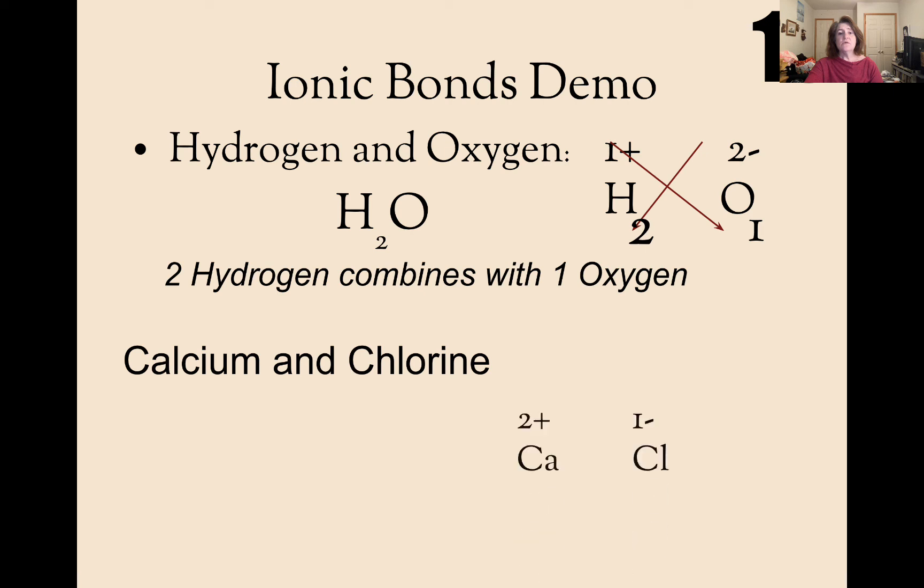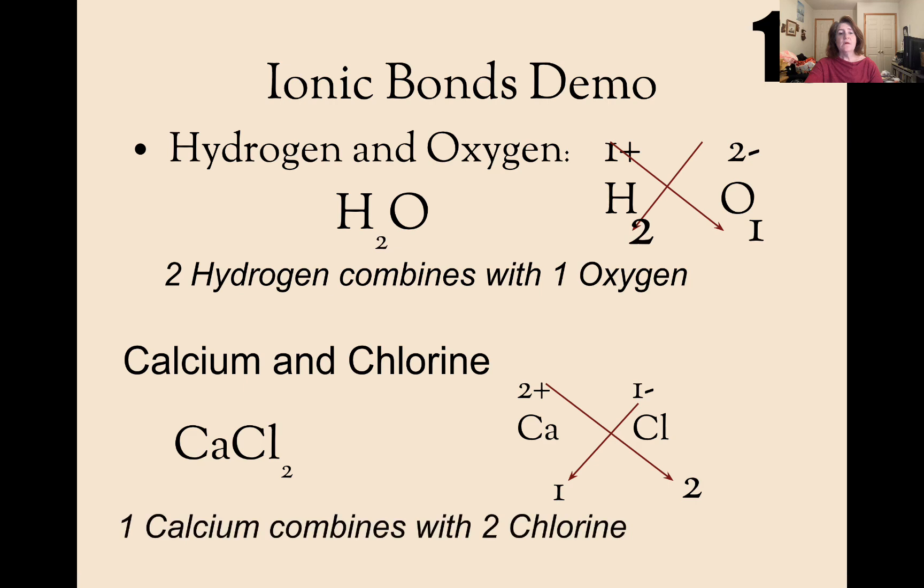Calcium and chlorine. Calcium is a two positive. Chlorine is a one negative. The two goes down to be with chlorine. The one goes down to be with calcium, leaving you CaCl2. One calcium combines with two chlorine.